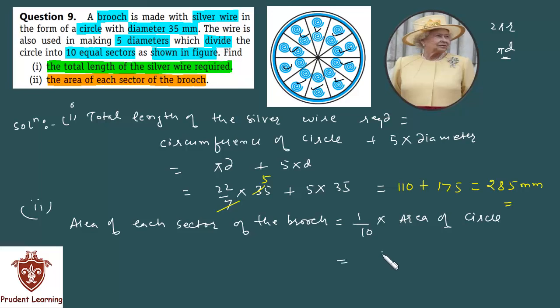Which is equal to 1/10 into the circle's area, which you can find using π r². Actually here the diameter is 35 mm, so the radius will be 35/2 which is equal to 17.5 mm. Substitute the values: 1/10 into pi, in place of pi write 22/7, and radius is 17.5, square it.